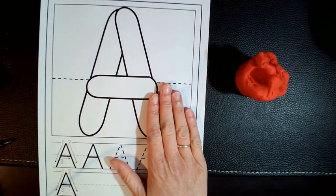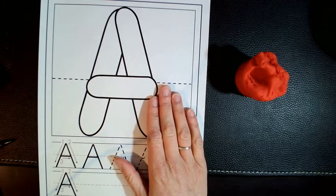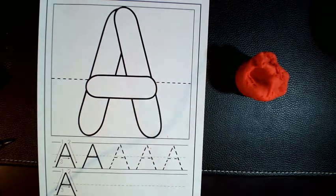If you do not have a Play-Doh mat, that's okay. Take a blank piece of paper and you can write the letter that you're planning on building with your Play-Doh on top of that.